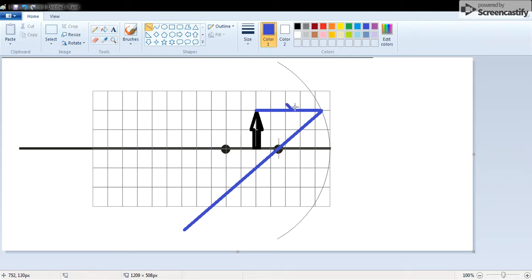So the beam of light that goes in straight will head out through the focus. Then if we take a beam that goes through the focus, it should head out straight. And it already looks like we have an intersection.